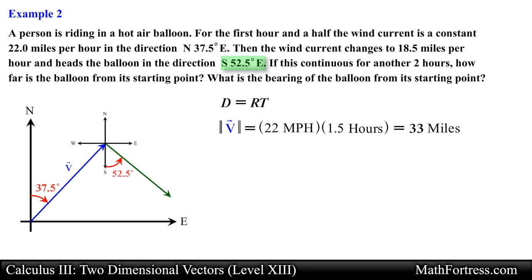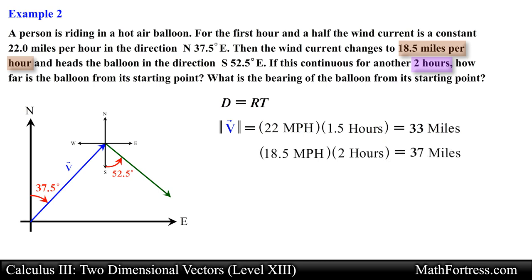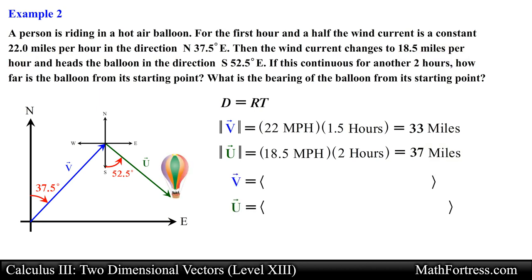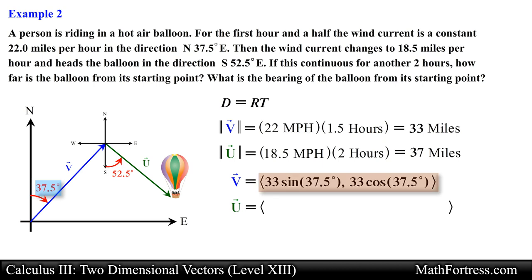From the head of vector v, we start south and move towards the east at an angle of 52.5 degrees. The balloon is moving at 18.5 miles per hour for 2 hours, giving 37 miles for this second trip. Let's call this vector u. Now it is just a matter of adding both vectors v and u component-wise. Using the 37.5-degree angle, we obtain the components of vector v.